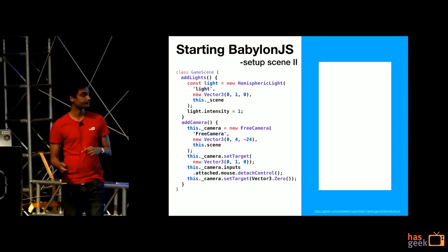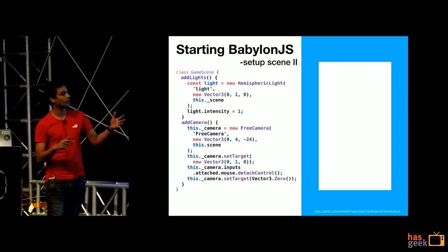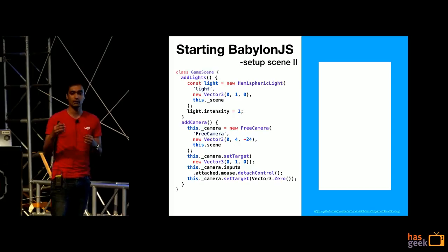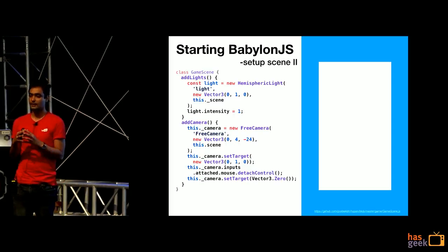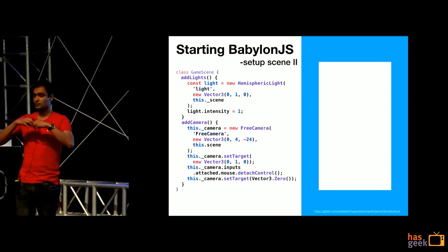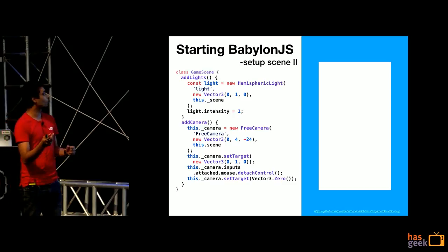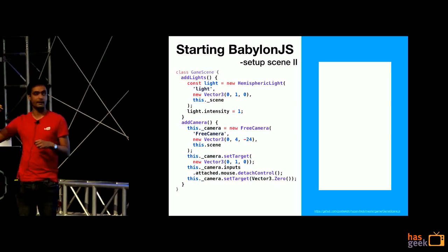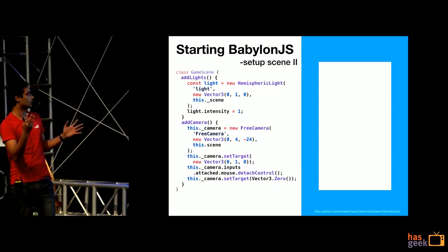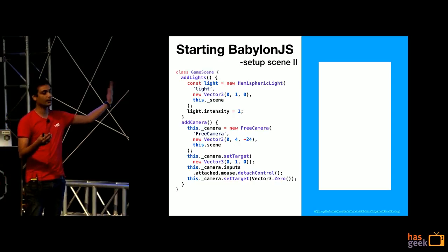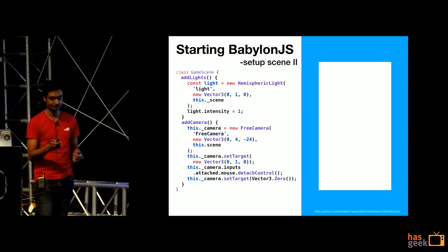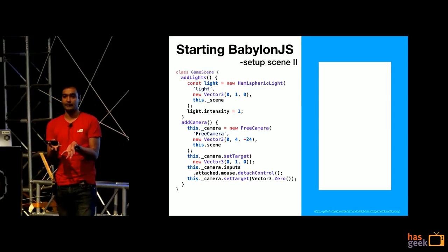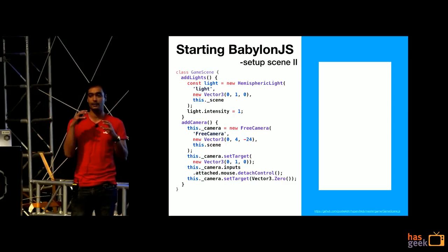Next we add lights. To add lights to our game, we do a new HemisphericLight — there are multiple kinds: point light, hemispheric light, and others which you can read about. Hemispheric light is like a tube light in a room that evenly spreads over your entire stage. We give it the name, a vector where the light source will be placed, and the scene it will be attached to. You can alter the intensity and it will reflect on your objects accordingly.